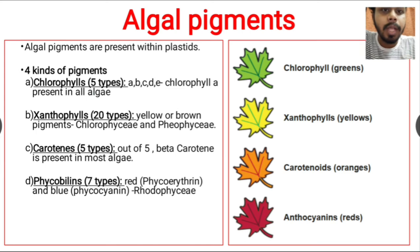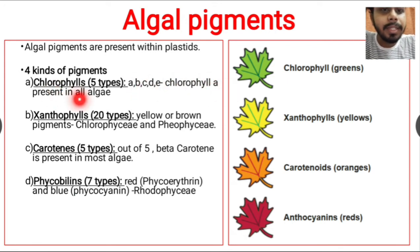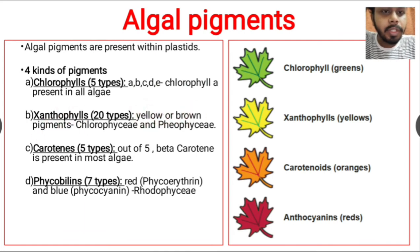Algal pigments are present within plastids. In plastids, four kinds of pigments are present: chlorophyll, xanthophyll, carotene, and phycobalene. Five types of chlorophyll are present in algae — chlorophyll a, b, c, and d — and chlorophyll a is present in all algae. Twenty types of xanthophylls are present, giving yellow or brown pigments.